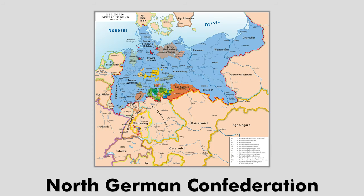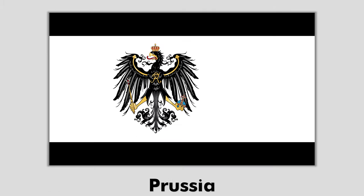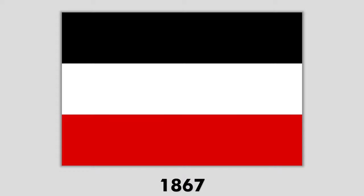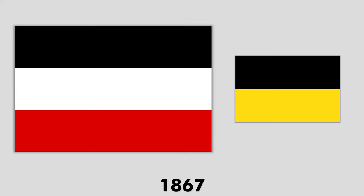Following the dissolution of the German Confederation in 1867, Prussia formed its unofficial successor, the North German Confederation. In 1867, the coalition adopted a flag that blended the colors of its largest and smallest member — Prussia, black and white — and the Hanseatic League, red and white — into a new black-white-red horizontal tricolor. The absence of gold from the flag also made it clear that this German state did not include the black and gold monarchy of Austria.